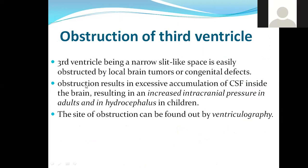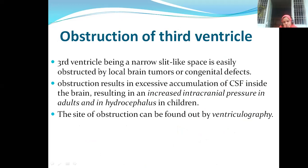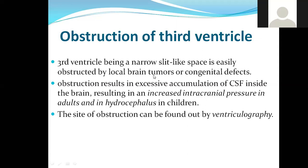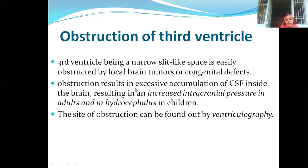The third ventricle is a slit-like space between the thalami and may be obstructed by local brain tumors — tumors of the thalamus — or congenital defects. Obstruction results in excessive accumulation of CSF inside the brain, resulting in increased intracranial pressure — hydrocephalus, same as what you studied for the fourth ventricle. The site of obstruction can be found by ventriculography.